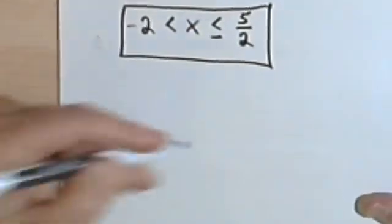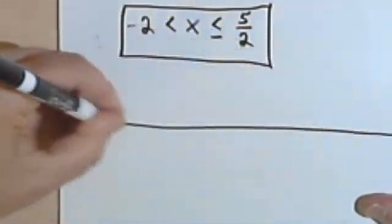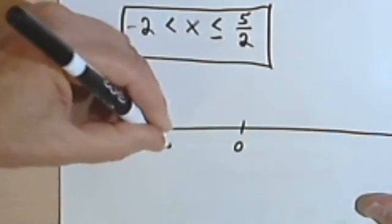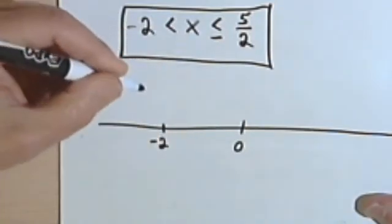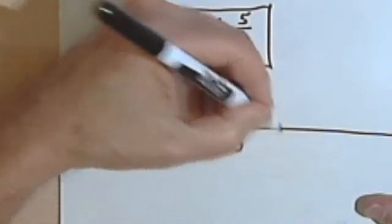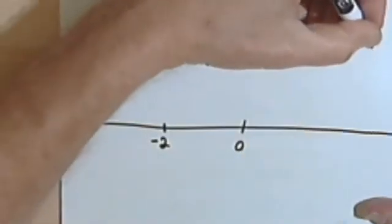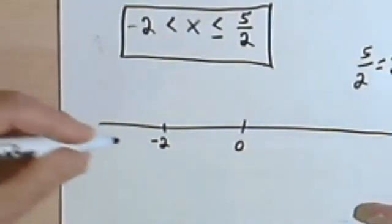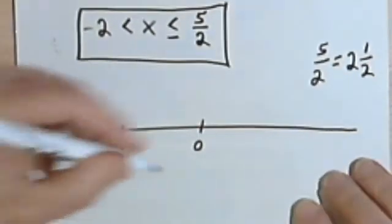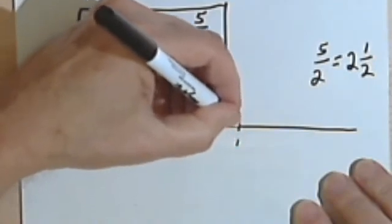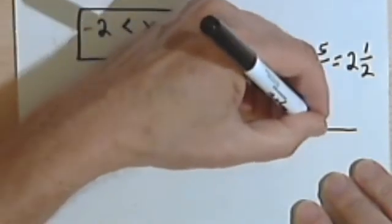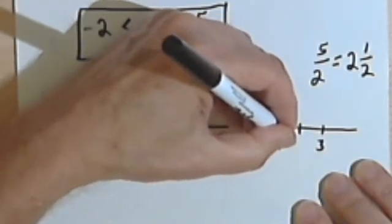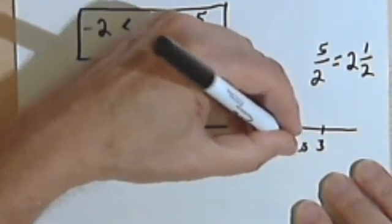If I have to show this on a number line, I'll draw my number line. Here's my 0. Here's negative 2 over here. Let's see, so I've got 5 halves. Let's realize that 5 halves is the same as 2 and a half. So if this is a 1, and this is a 2, and this is a 3, I guess my 5 halves would be right around here. Let's call that 2.5.